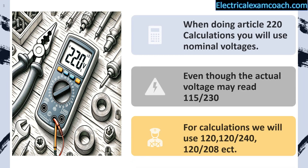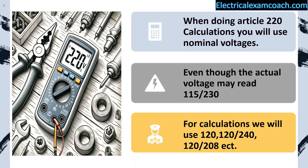When doing Article 220 load calculations, we're going to be using nominal voltages. Although our actual meter reading might be 115 or 130, for our calculations we're going to use nominal system voltages like 120, 240, and 208. It makes it a lot easier to do these calculations without having to guess what the actual voltage readings might be.